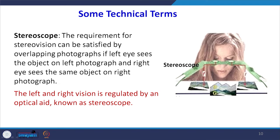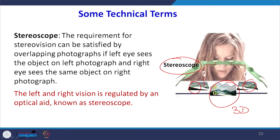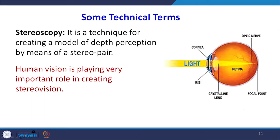We need one more thing: a device called a stereoscope. The stereoscope is one such device required to create stereo vision because our eye can mix up those views — there could be cross vision where the left eye sees the right photograph and the right eye sees the left photograph. In order to streamline the vision, we need a device known as the stereoscope. Here the person is looking through the stereoscope at the 2 photographs — left photo and right photo — and creating a 3D model by fusing those images together.